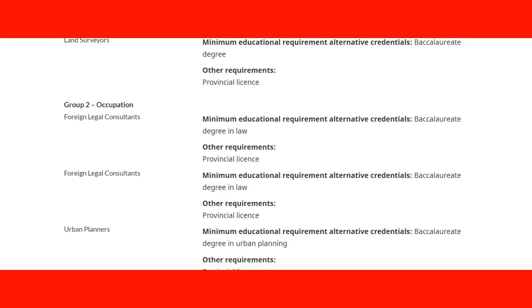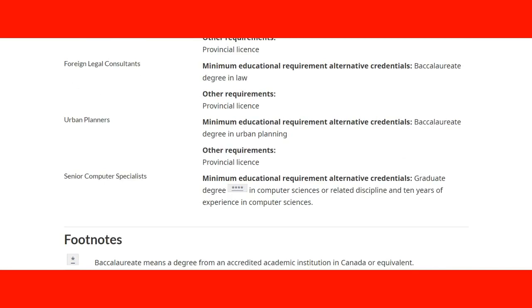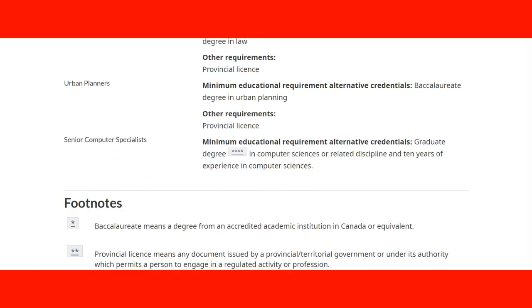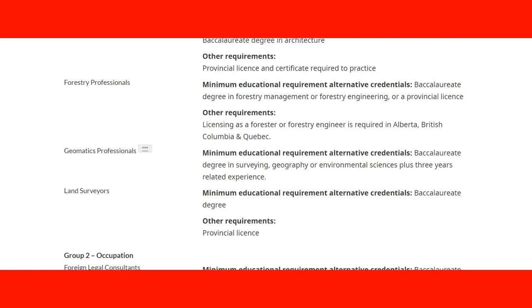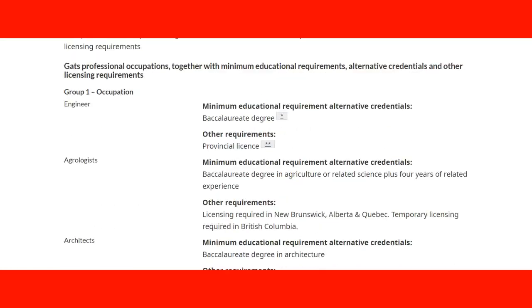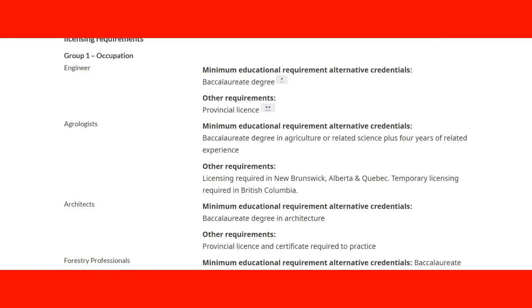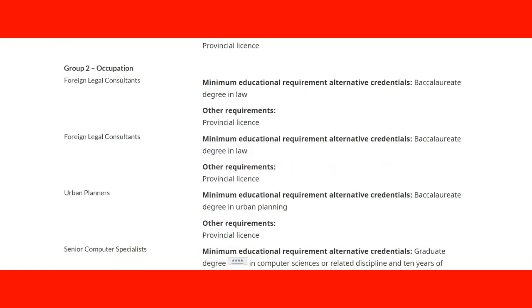In group two, for example, a foreign legal consultant will need a bachelor's degree in law and a provincial license. Every profession has its education and minimum requirements. Remember that bachelor's degrees must be equivalent to the Canadian system — you use agencies like WES to accredit your education in Canada. Provincial licensing is a separate process on top of that. The page link will be provided in the lecture.